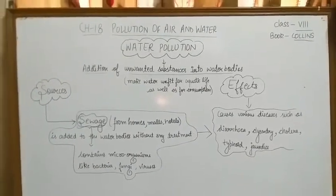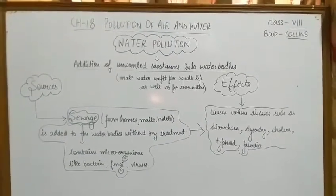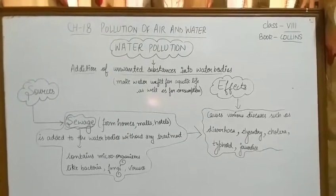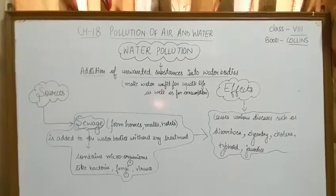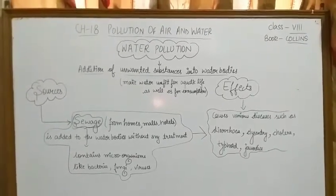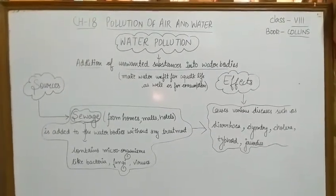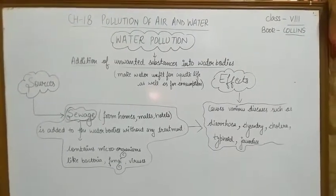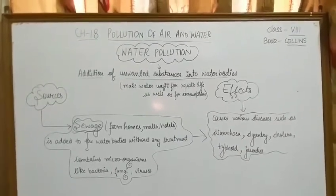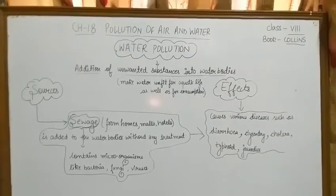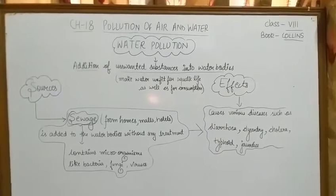To define water pollution, its meaning is that when unwanted substances, that is pollutants, are added in a very large amount into water bodies or water sources due to increasing industrial and human activities, that process is called water pollution. Because of this addition of unwanted substances, water bodies become unfit for aquatic life and these sources cannot be used for consumption, as water pollution makes water very unfit for consumption by human beings and other living beings.